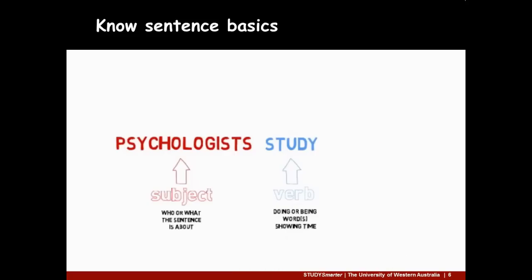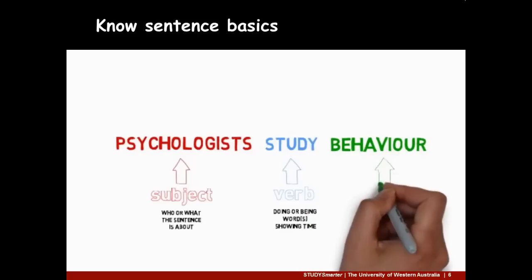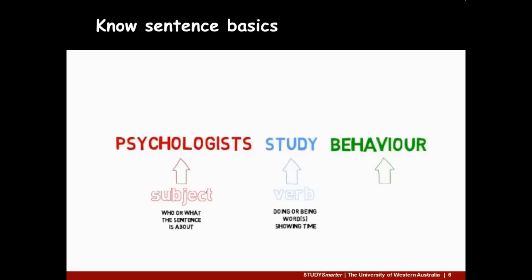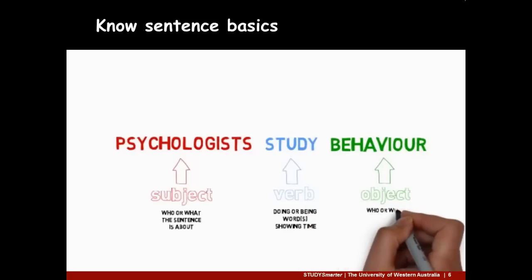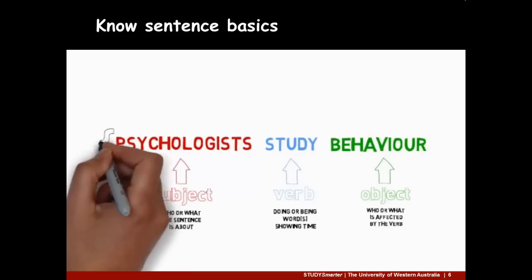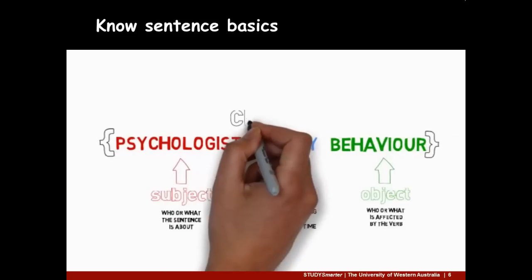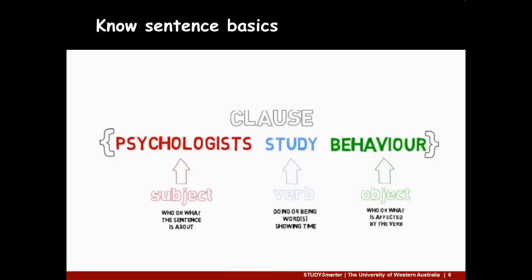They describe what is happening and when. Third, if you need one, place an object straight after the verb. Objects tell readers who or what the verb is affecting. These three elements make an independent clause. An independent clause, such as this one, with a subject and verb showing time, can form a simple sentence.